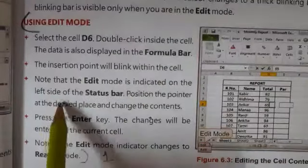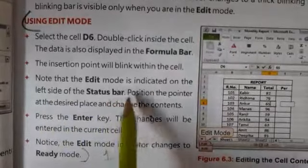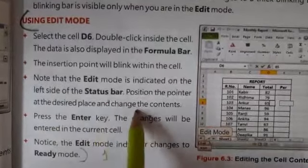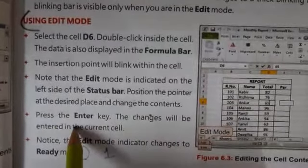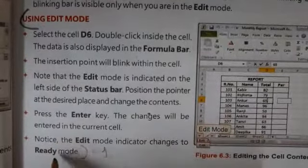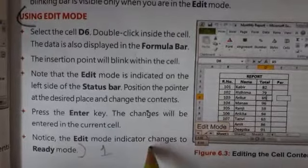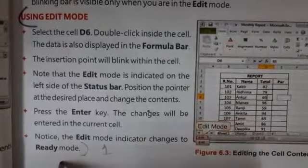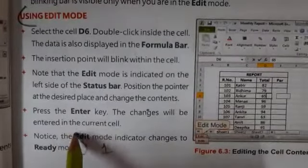Note that the edit mode is indicated on the left side of the status bar. Position the pointer at the desired place and change the contents. Then press Enter key. Changes will be entered in the current cell. Now notice that it changes into the ready mode. This is the answer number one.